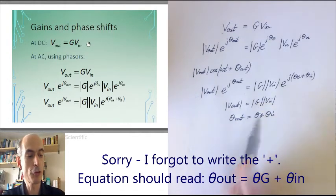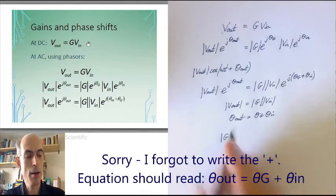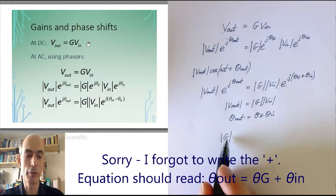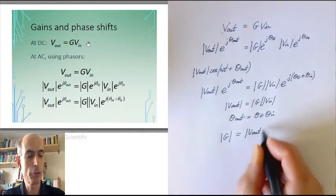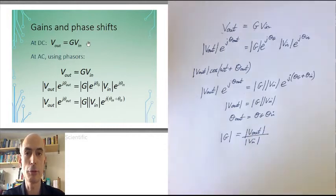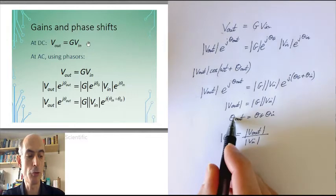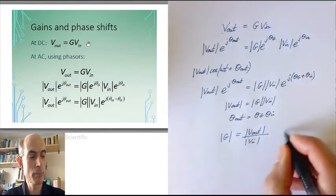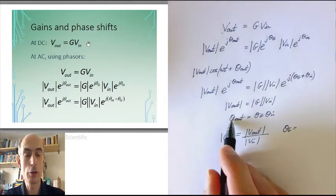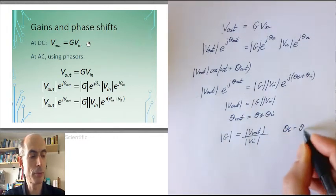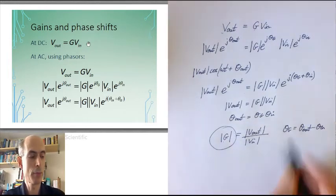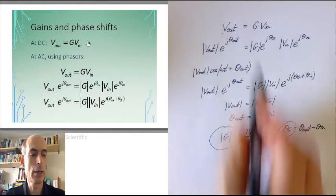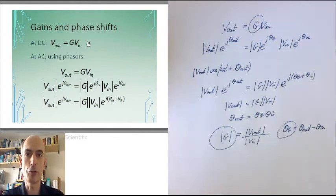From these two equations we can see that the amplitude response — the magnitude of the gain as a function of frequency — is just the magnitude of the output phasor divided by the magnitude of the input phasor. And the phase response, theta_g, is just the phase of the output minus the phase of the input. So this is the amplitude response, this is the phase response, and this — just g — is the frequency response. All of them are functions of frequency.